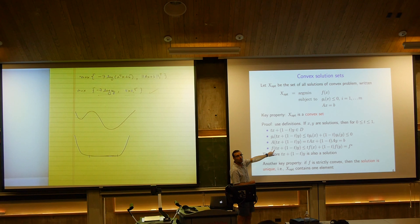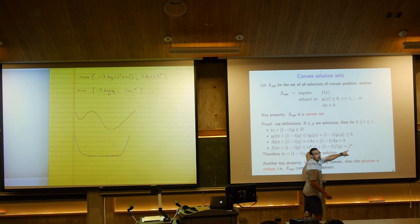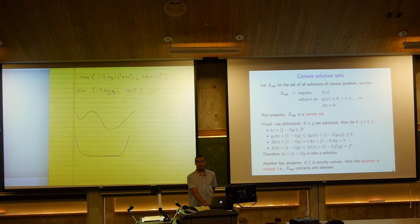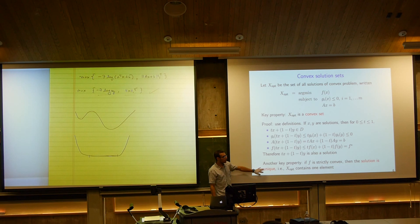To check uniqueness with strict convexity: go through the same logic but get a strict inequality. If there were two solutions that weren't the same, you'd find a convex combination with criterion value strictly smaller than f* — a contradiction. So strictly convex criterion implies unique solution.